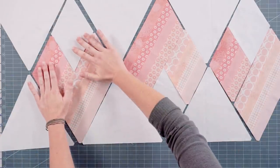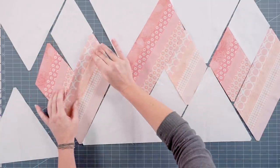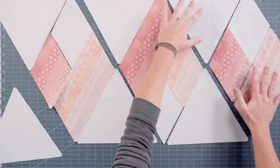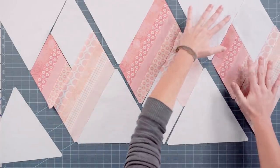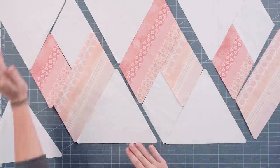So you've sewn your diamond units together, and then you're going to do a triangle to each side. Same thing here. So it creates kind of a row. A row with diamonds or triangles on each edge.